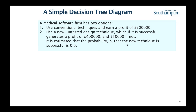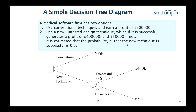Since this is a decision analysis problem, we need probabilities. In this case, we do have them: the probability that the new technique is successful is 60%. So what can we do now? We can look at it graphically. In the decision tree, the conventional technique clearly gives an outcome of 200,000 pounds profit. The new technique — well, it depends. If successful (60%), 400,000 pounds of profit; if unsuccessful, 50,000. The question is, what should we do?